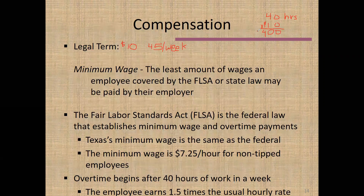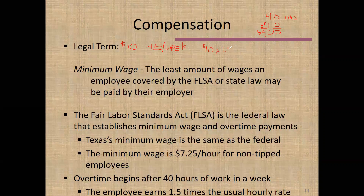Next, we calculate the five overtime hours — all hours over 40 — at time and a half. We take the hourly rate of $10 and multiply by 1.5, which gives us $15 an hour as the overtime pay rate. For the five overtime hours: $15 times 5 equals $75. So for this particular week, I would earn $400 plus $75 for a grand total of $475.